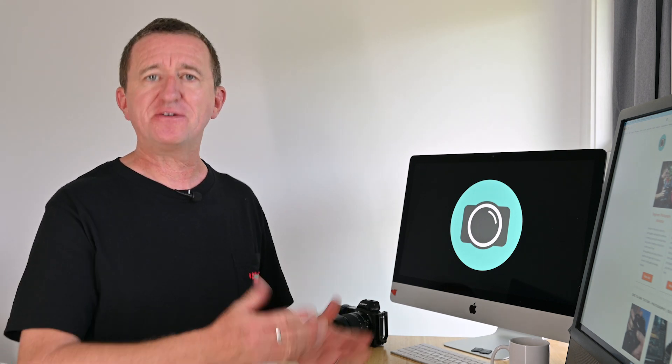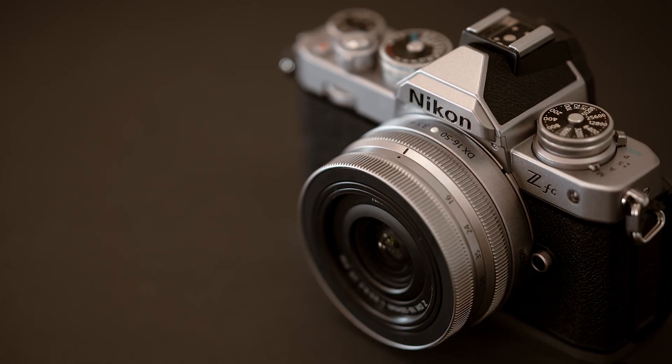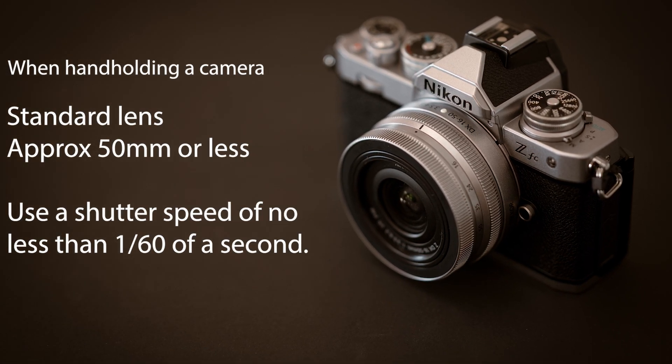Image stabilization is going to be particularly useful if you're using a slow shutter speed and you're not using a tripod — so this may be doing indoor photography, taking photos at the end of the day, or possibly even at night time. The conventional rule is if you're using a standard lens around 50mm or less, you don't really want to be using a shutter speed any slower than 1/60th of a second. Note this rule may change depending on the camera and lens combination you're using — I've made a separate video on this subject, with a link at the end of this video and in the description below.